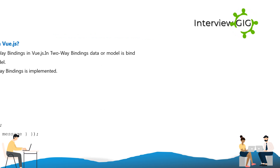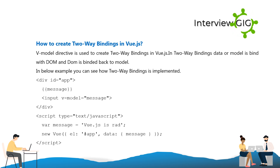How to create two-way bindings in Vue.js? The v-model directive is used to create two-way bindings in Vue.js. In two-way bindings, the data or model is bound with the DOM and the DOM is bound back to the model.